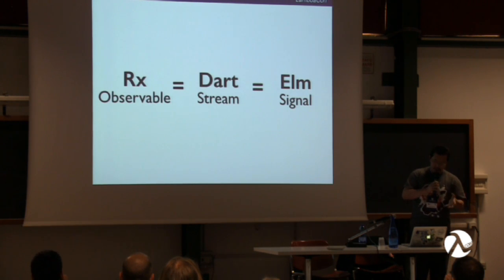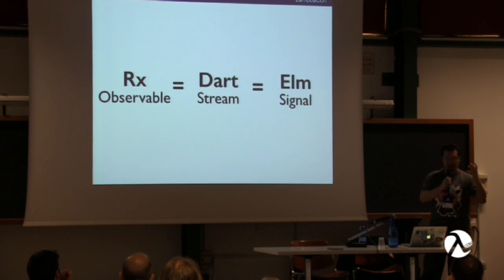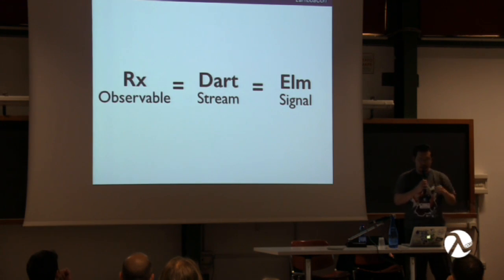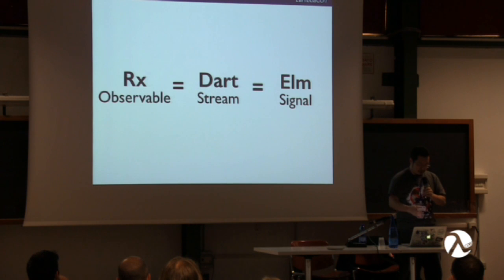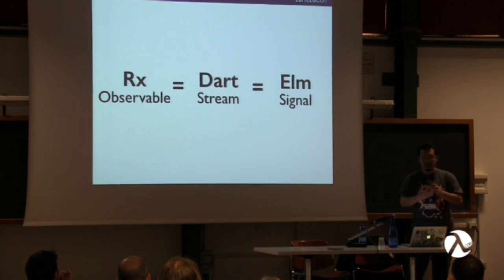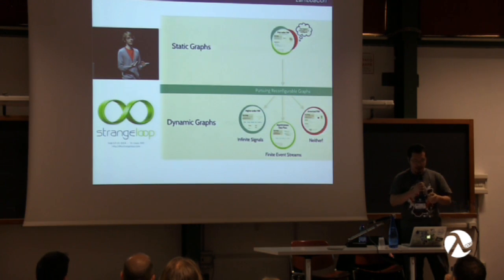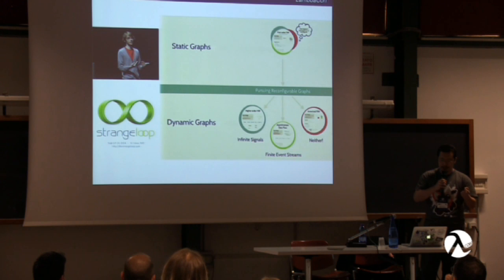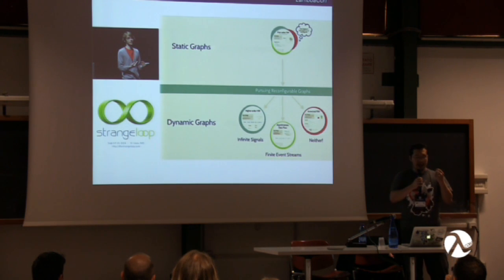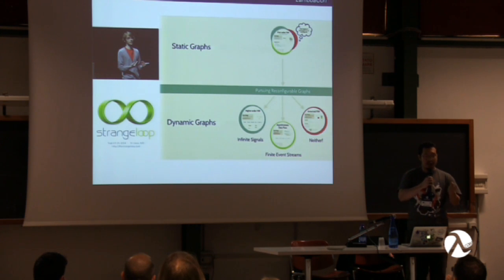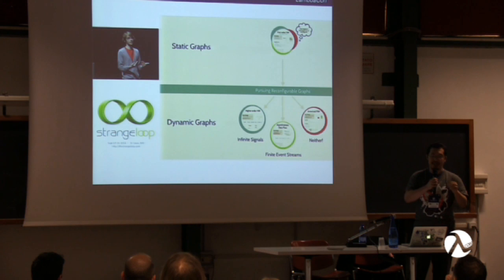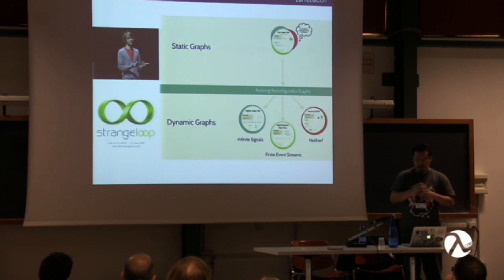Elm's signal concept also exists in other languages and frameworks: in Reactive Extensions it's called an observable, in Dart it's called a stream. Whilst they are conceptually similar, they have different intricacies — something Ivan Sabliski talked about at Strange Loop, discussing different approaches to functional reactive programming. In Elm, everything is compiled into a static graph, which has performance benefits but some limitations in terms of flexibility.